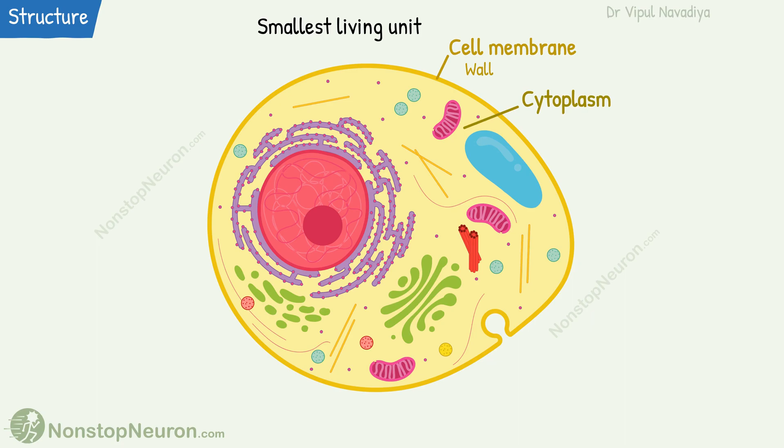Organelles are like different departments inside the cell. The nucleus is like the brain — it's the control center of the cell. It contains the genetic material, DNA. Genetic information is like the constitution of the cell. What a cell will do and how it will do it depends on the expression of specific genes.